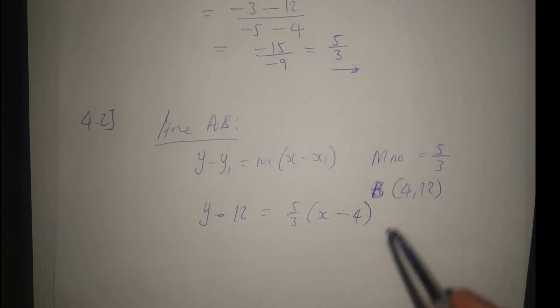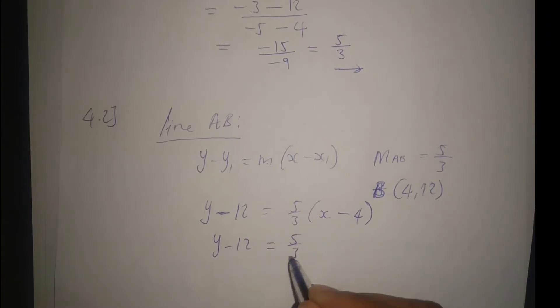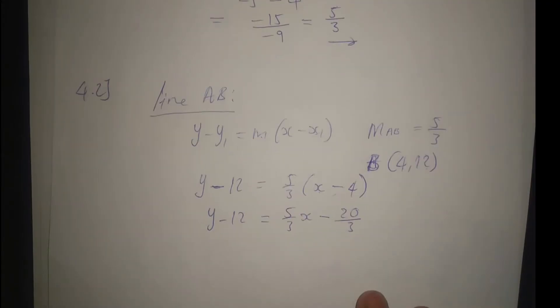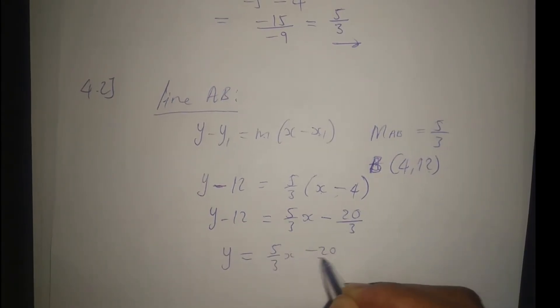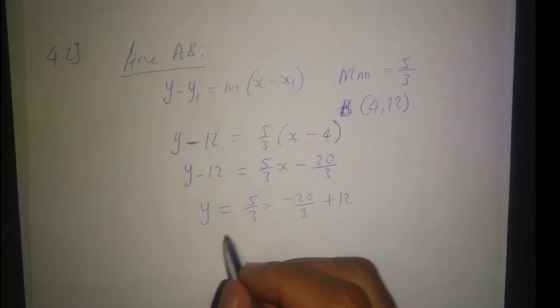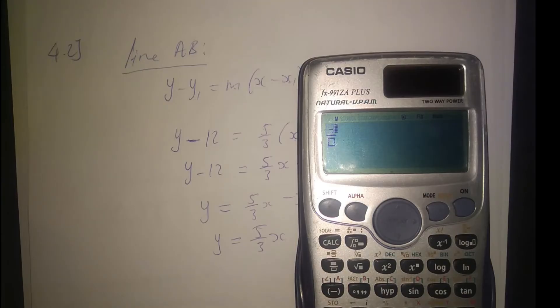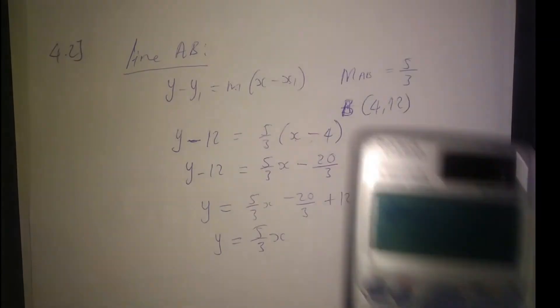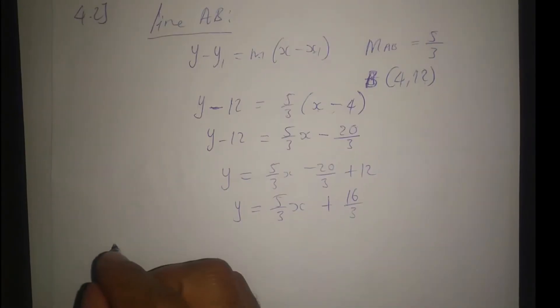So y minus 12 equals 5/3 times (x minus 4). That's y minus 12 equals 5/3 x minus 20/3. Transposing 12 gives y equals 5/3 x minus 20/3 plus 12, which equals 5/3 x plus 16/3. So this is our equation.